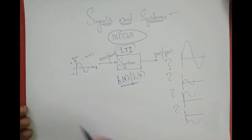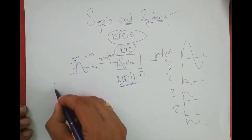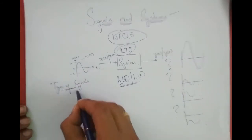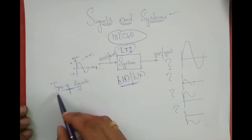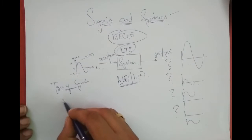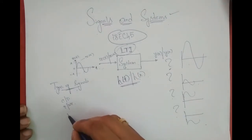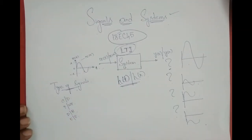We will also study the types and classification of signals. After this topic, given a signal, you should be able to classify whether it is a continuous time or discrete time signal, whether it is periodic or non-periodic, whether it is deterministic or random, whether it is even or odd, and whether it is an energy or power signal. That gives us five types of classification of signals.